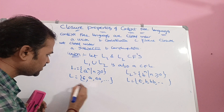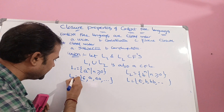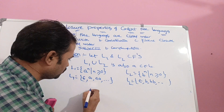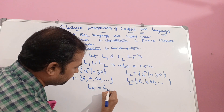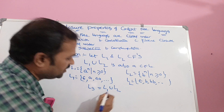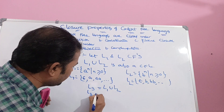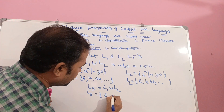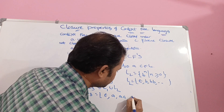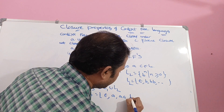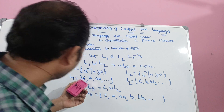The new language L3 is formed by L1 union L2. Then L3 will become: epsilon, a, aa, and so on, as well as b, bb, and so on.